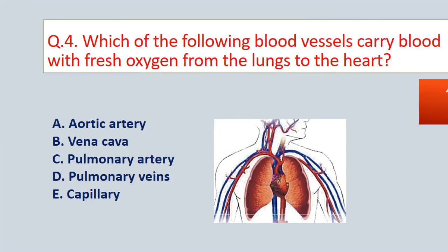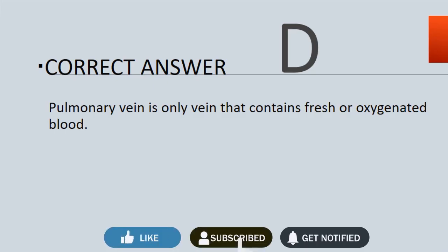Question No. 4. Which of the following blood vessels carry blood with fresh oxygen from the lungs to the heart? The correct answer is D. The pulmonary vein is the only vein that contains fresh or oxygenated blood.